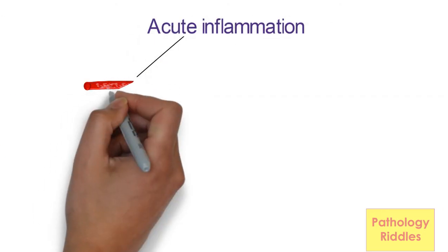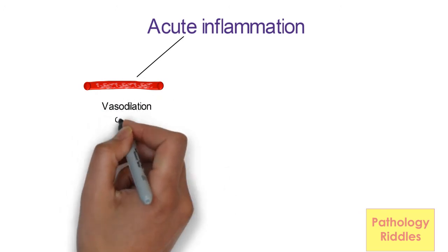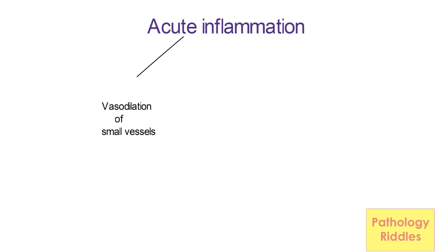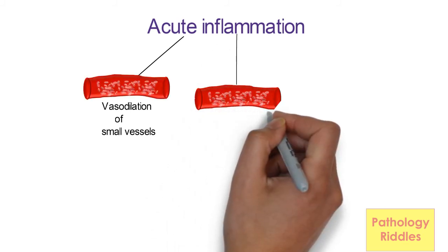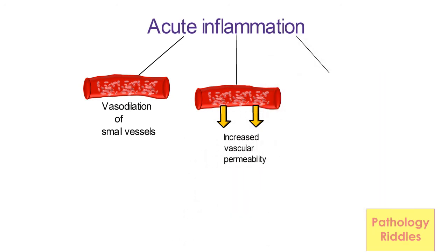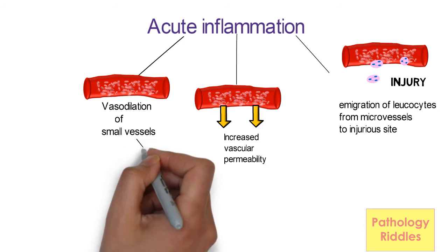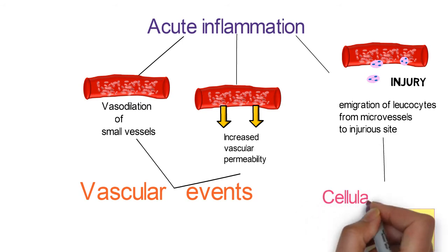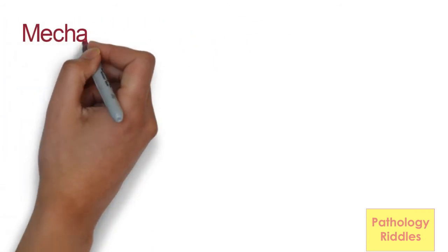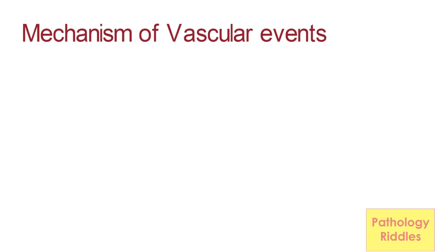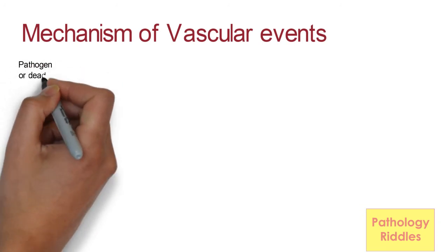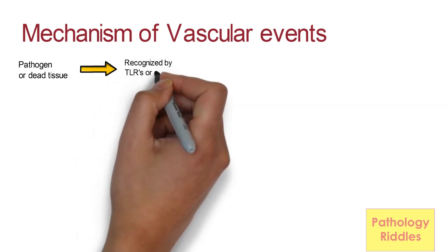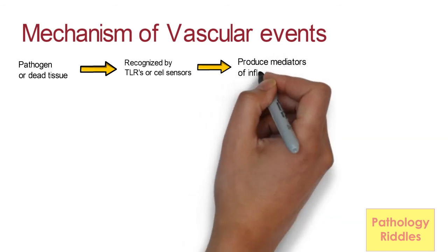We will first learn about acute inflammation. Acute inflammation has three components: vasodilation of small vessels — i.e. arterioles — which increases blood flow; increased vascular permeability, which leads to exudation of plasma proteins and leukocytes; and emigration of leukocytes from the microvessels to the site of injury to eliminate the offending agent. The first two are vascular events, and the third is the cellular event. So, what is the mechanism of vascular events? Let's see vasodilation first. As we already learned, the pathogen or dead tissues are recognized by receptors or sensors and produce mediators of inflammation.